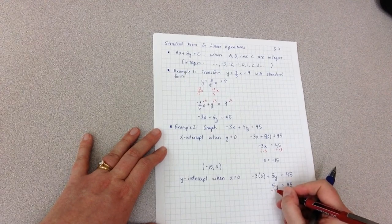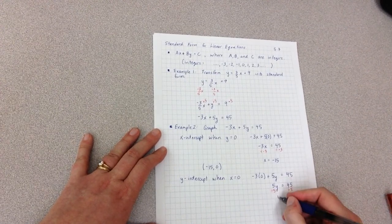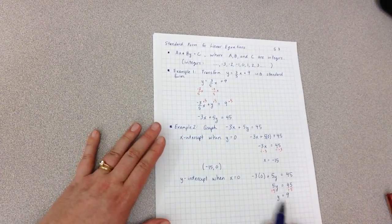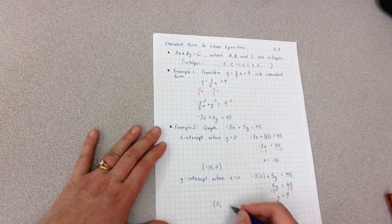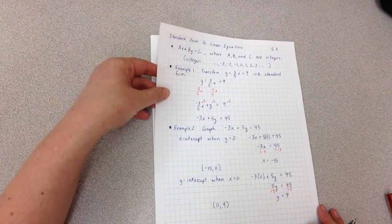Divide both sides by 5, I'm left with y equals 9. And of course I have an x value and a y value, which means I have a point, 0 comma 9.